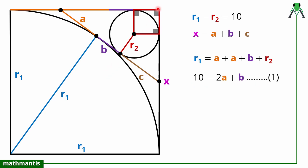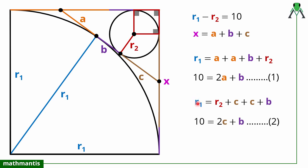Now we will make a similar equation for this length. From this point I have drawn this tangent to this point, and this will be the same length — so this is length c, and this will also be length c. From this point I have drawn two tangents to this arc; this length and this length, so this length is b plus c, and from here this length will also be b plus c. So the equation becomes: r2 plus c plus (b plus c) equals r1, giving us r1 minus r2 equals 2c plus b.